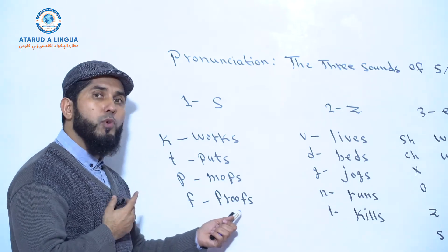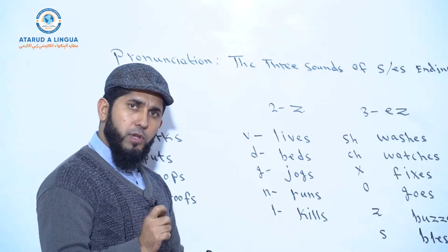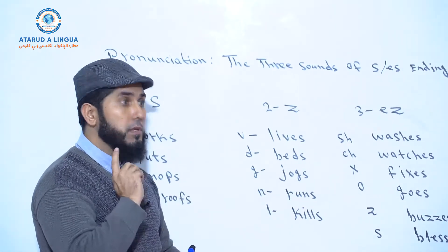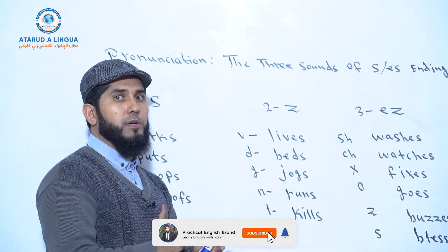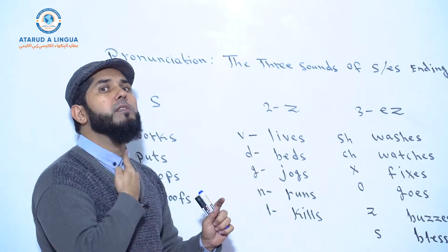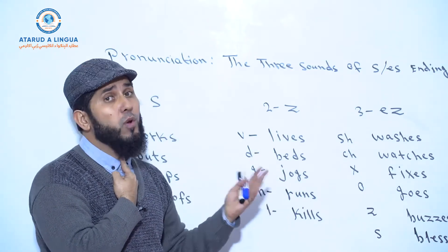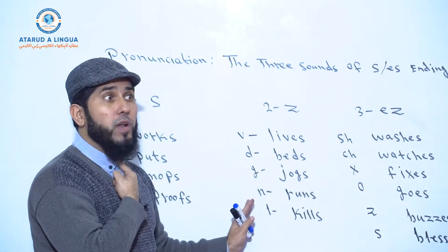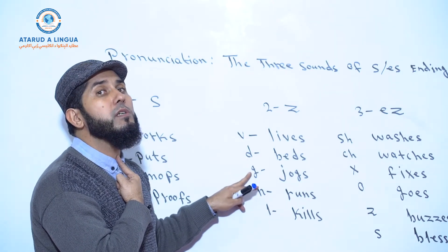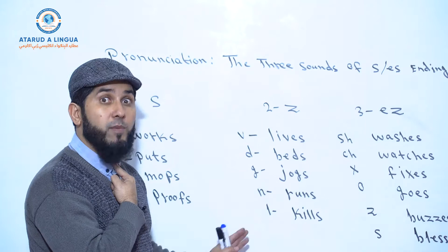These letters are voiced consonants and they come at the end of these verbs and nouns. Z is also a voiced consonant, so the condition of vibration continues. There is a letter S but it is pronounced like a Z sound — because of these voiced consonants. There's vibration: Z, D, D, J, J, N, N, L, L — vibration.